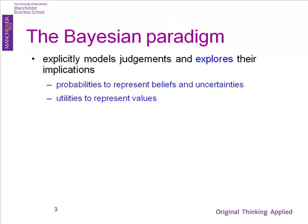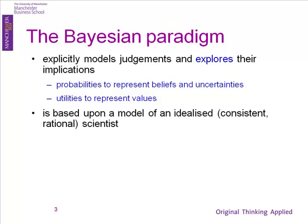You use probabilities to represent your belief in the value of a parameter — how likely you think a quantity is to be here or there. Then you update that belief with data, and you explore how your belief changes. You explore what your belief would be if you had different starting points, and gradually that brings in a model of an idealised, consistent scientist — a scientist who can adjust his judgments before the event, before he sees the data, to what he believes after seeing the data.